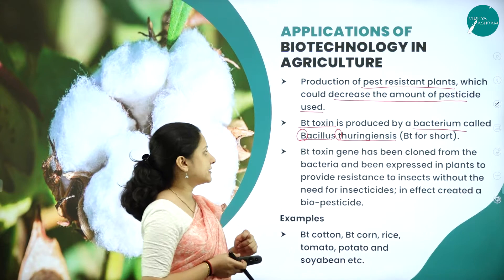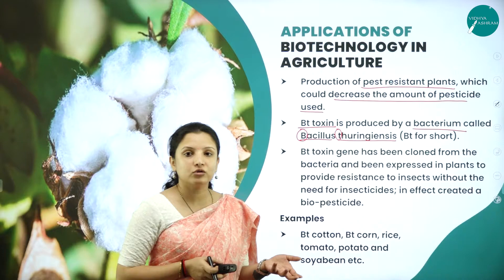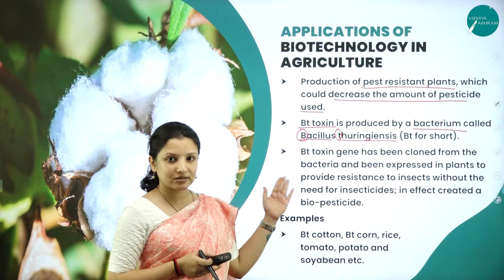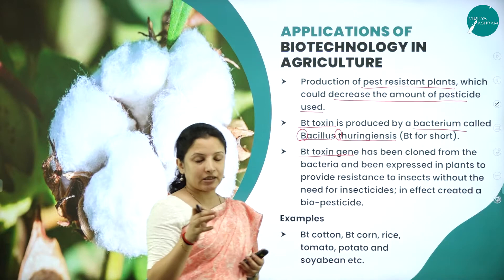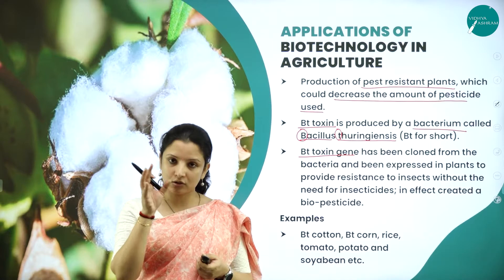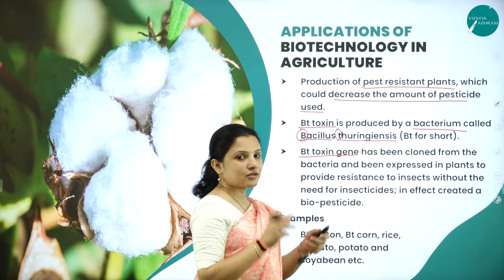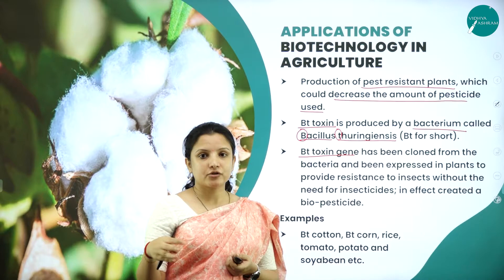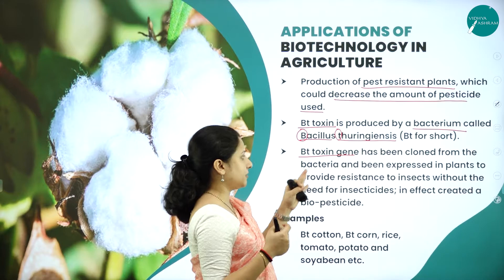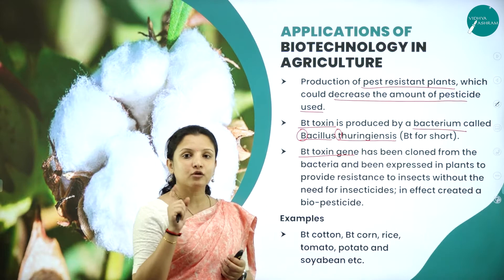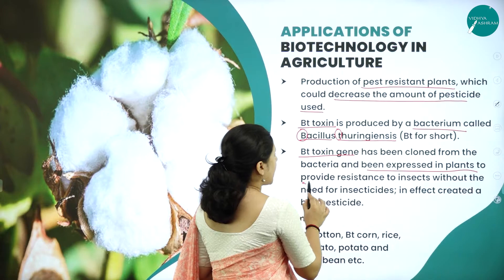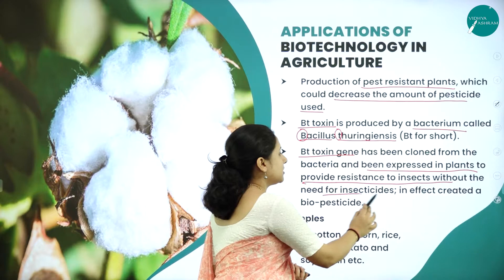The Bt toxin gene has been cloned from the bacteria through recombinant DNA technology. There is a gene in Bacillus thuringiensis that produces a protein called Bt toxin. That gene was isolated, subjected to recombinant DNA technology, and multiple clones of it were produced. These copies were put into the cotton plant and expressed in plants to provide resistance to insects without the need for insecticide.